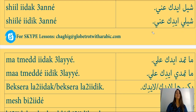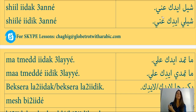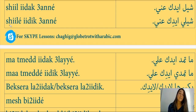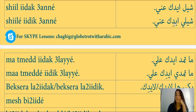The next expression: sheil eidak anni or sheil eidik anni. Sheil is the imperative form of remove — masculine sheil, feminine sheil. Eidak is your hand masculine, eidik is your hand feminine. Anni means from me or off me. So: get your hands off me. Sheil eidak anni to a man, sheil eidik anni to a woman.